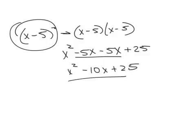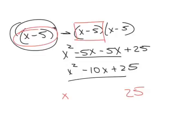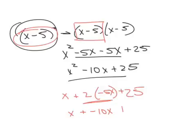When you square a binomial like that, there's a pattern. Looking at x minus 5: you take the first term and square it, you take the second term and square it, and the middle term is always two times the product of each term — so x times negative 5 is negative 5x, times 2 gives negative 10x. So we get x squared minus 10x plus 25.